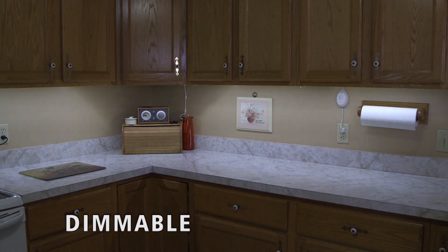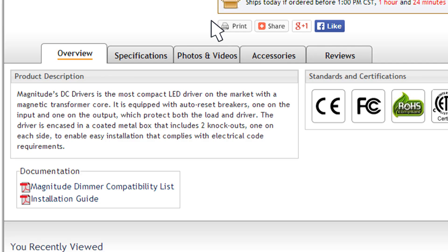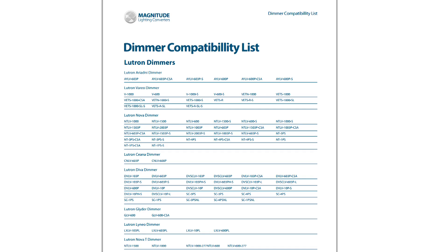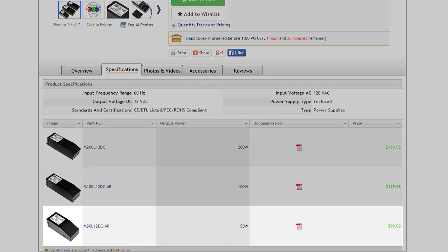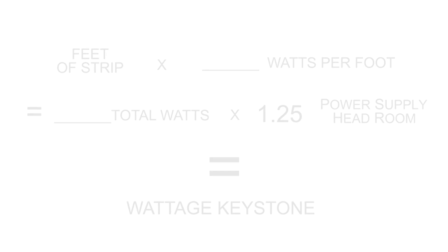There are two ways that we can dim a single color strip. The first is to use one of our magnitude dimmable power supplies with an approved dimmer, and a list of those approved dimmers can be found on the product page. We have these power supplies available in 50, 100, and 200 watt models, so if your wattage calculation is over 200 watts with headroom, you will need to use multiple power supplies.